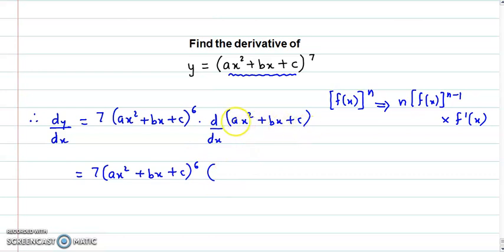Now the derivative of these three terms: a is a coefficient, so it remains as is, times the derivative of x² which is 2x. Plus b is the coefficient, so it remains as is, times the derivative of x which is 1. Plus c is a constant term, so its derivative is 0.